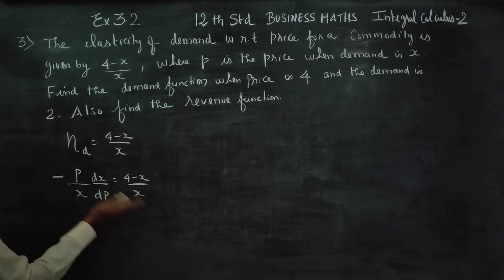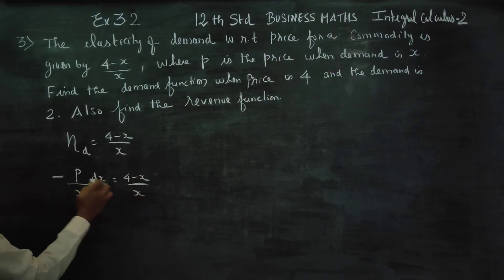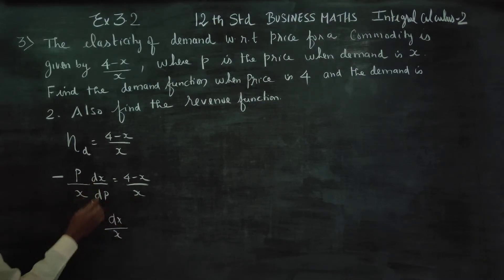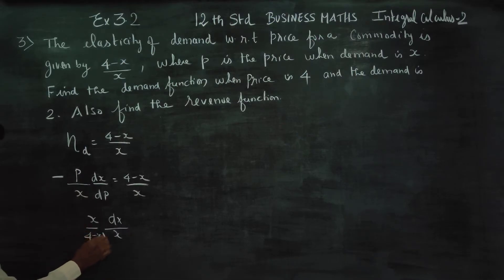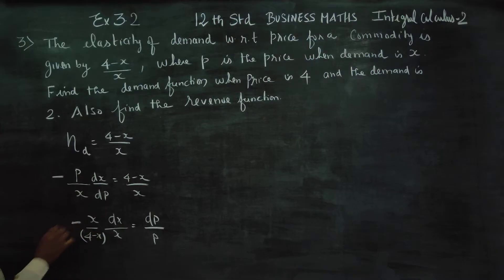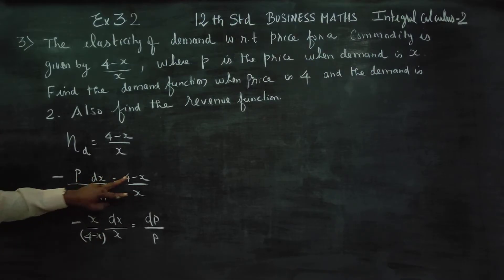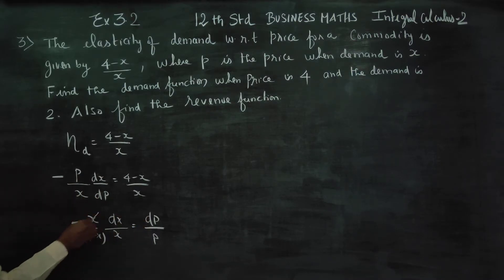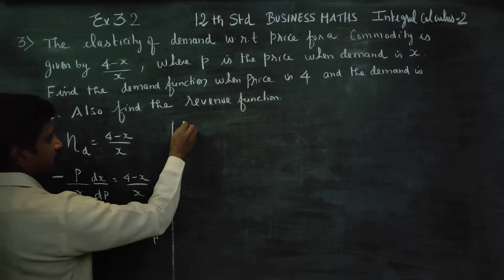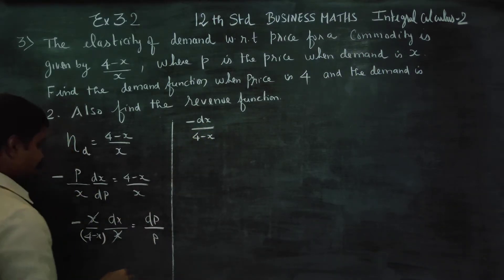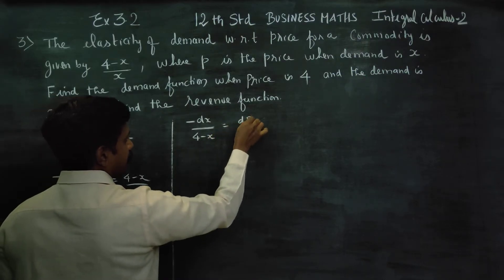Now, we have the formula for elasticity of demand. The value of p is equal to 4 minus x. Using cross-multiplication, we get dp in the next step. dp by p reciprocal gives us x and x cancel. The step becomes: minus dx by (4 minus x) is equal to dp by p.